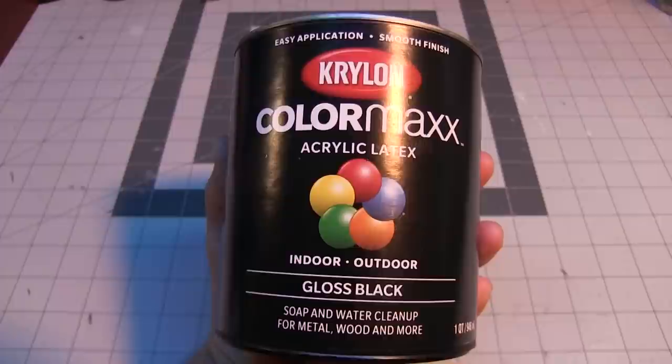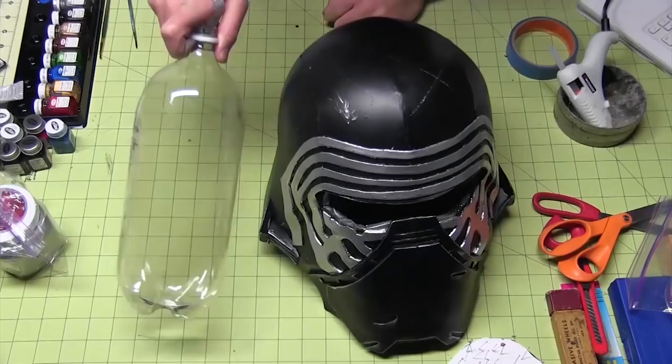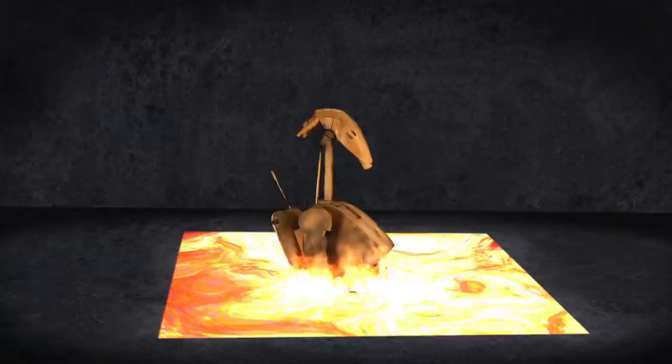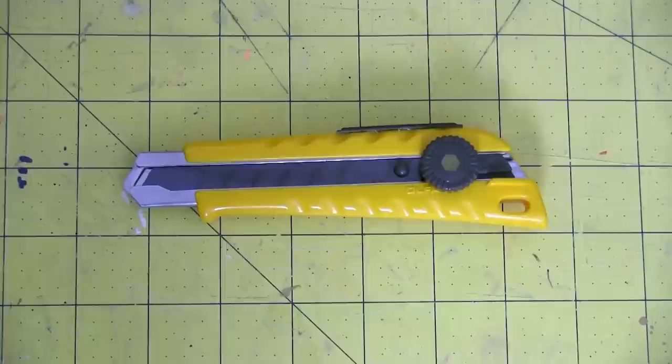For this build, you'll need EVA foam, contact cement, super glue, a Chicago screw, paint, a flexible filler such as Alex Fast Dry, a Hobart face shield or some substitute, a heat gun, a sharpening stone, sanding gear, safety gear, Beskar steel, the soul of a battle droid specifically one programmed to feel pain and fear, scissors, razor pens, and a box cutter.